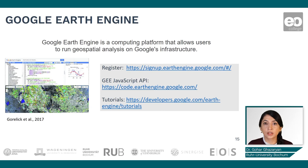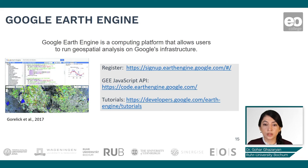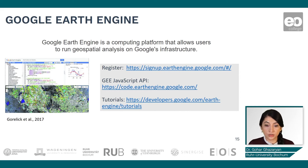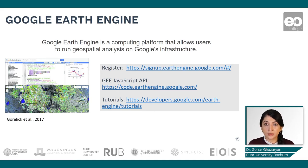As mentioned, we will use Google Earth Engine for these practicals. Google Earth Engine is a computing platform that allows users to run spatial analysis on Google's infrastructure. The prerequisite is to have a registration, which you can do following the provided link. The Google Earth Engine API is available in JavaScript and Python, and for these practicals we will use the web-based JavaScript API for interactive coding and development of algorithms.